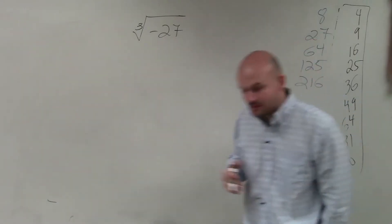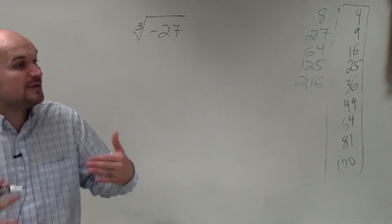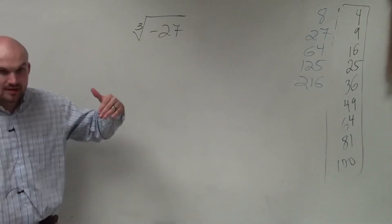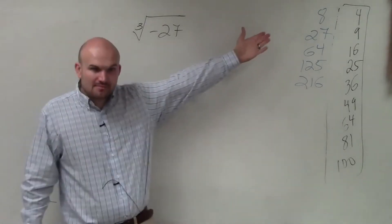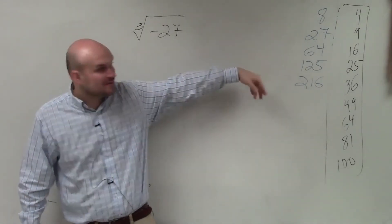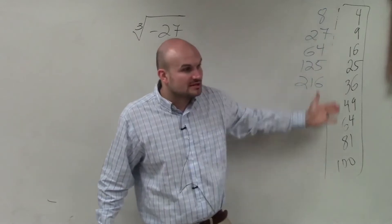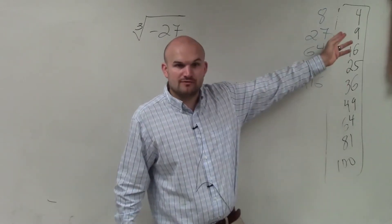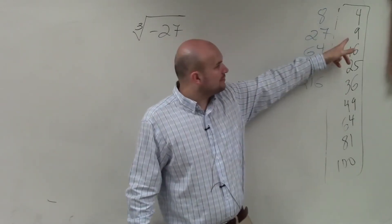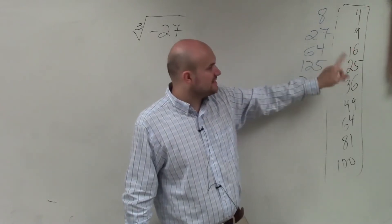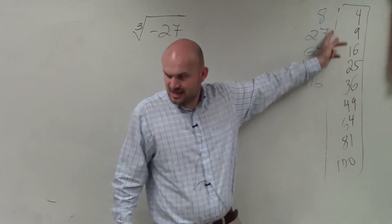So in this case, what I'm trying to do is identify what number multiplied by itself 3 times gives us negative 27. Well, ladies and gentlemen, I kept these numbers up here because I want you guys to write these down. Here is a list of square numbers. These are all numbers we can take the square root of. 2 times 2 is 4, 3 times 3 is 9, 4 times 4 is 16, 5 times 5 is 25.